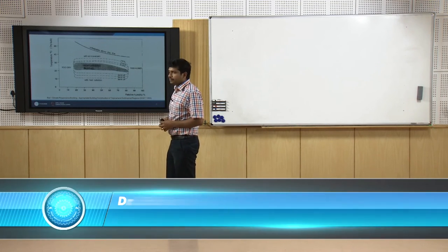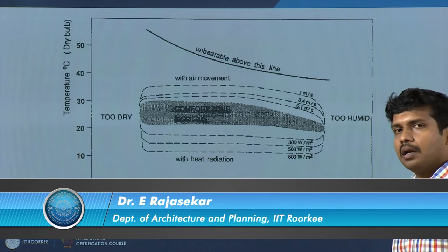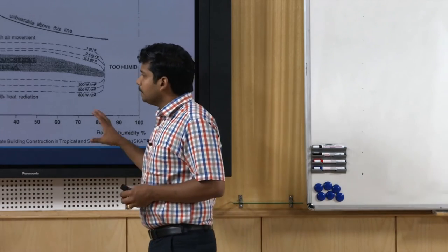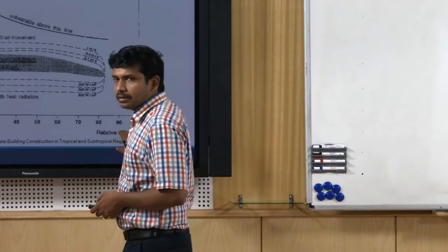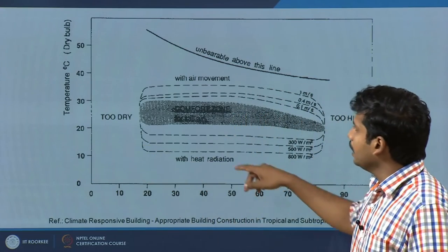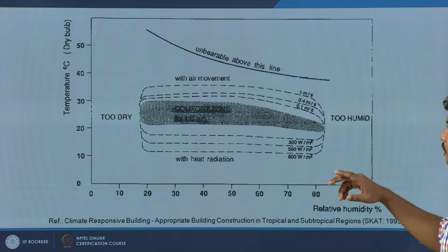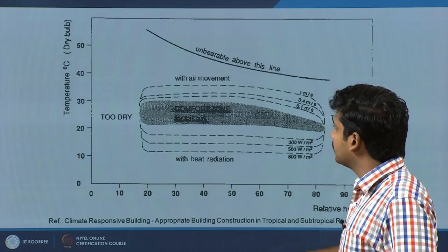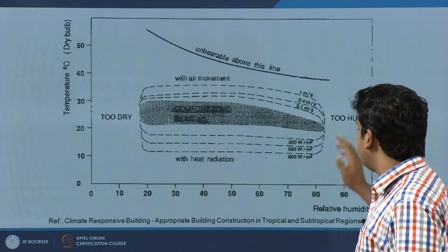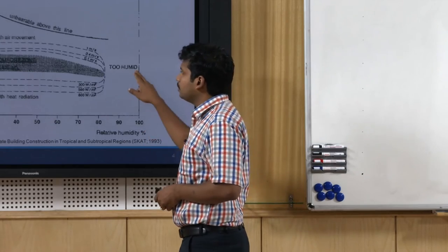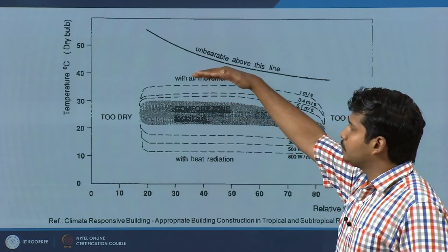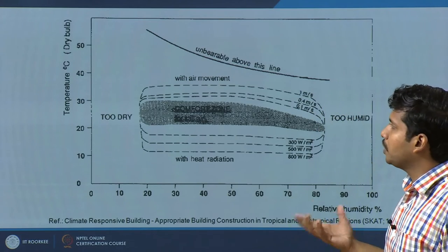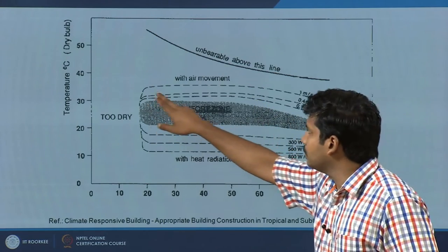The bioclimatic chart is a very interesting chart. It contains relative humidity on its x-axis and dry bulb temperature on the y-axis, with a comfort zone — this zone varies from location to location; originally it was developed in the US. Moving further right means relative humidity is very high — too humid; to the left is too dry. Above the comfort zone, where temperature and humidity are higher, you need better air movement to remain comfortable, which expands the comfort zone shown by the dotted line.